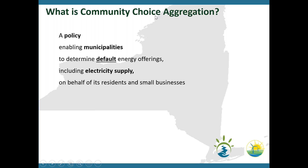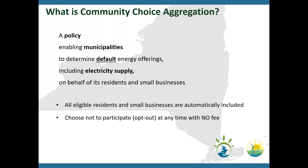So what is community choice aggregation? In short, it's a policy enabling municipalities to determine default energy offerings including electricity supply on behalf of its residents and small businesses. Basically it works as a buying club — you can think of it like a BJ's or a Costco where you buy things in bulk and therefore get a reduced price. The same purchasing philosophy applies here: municipalities and communities coming together gives the program the power to provide low fixed rates for electricity supply.